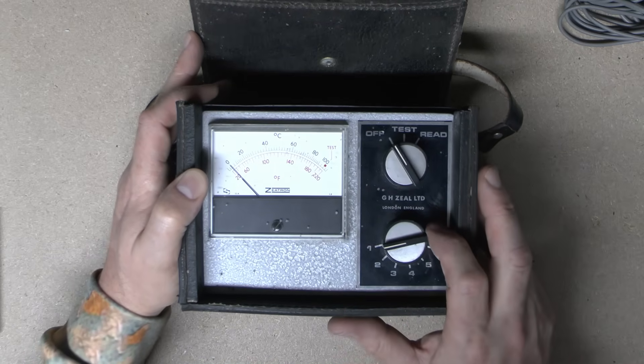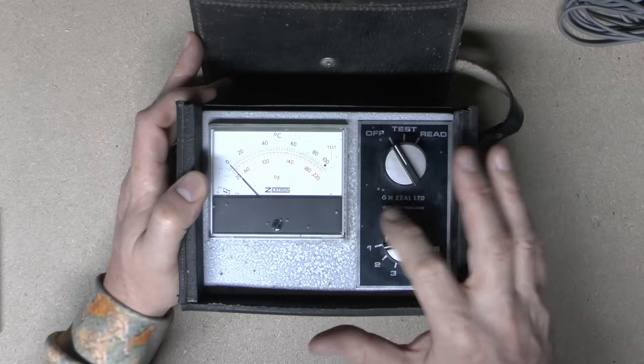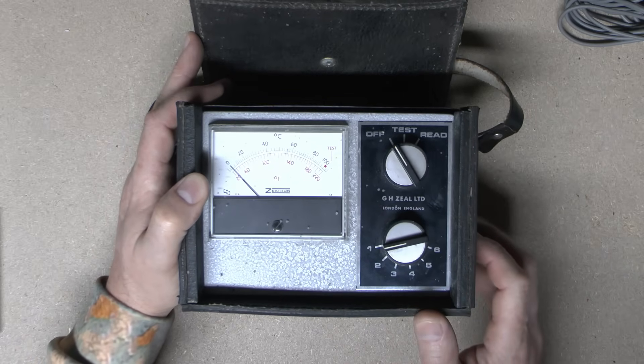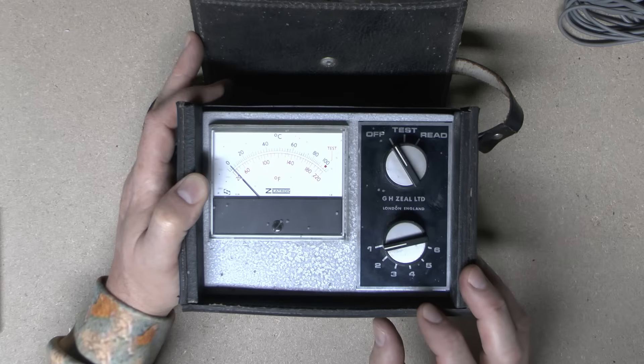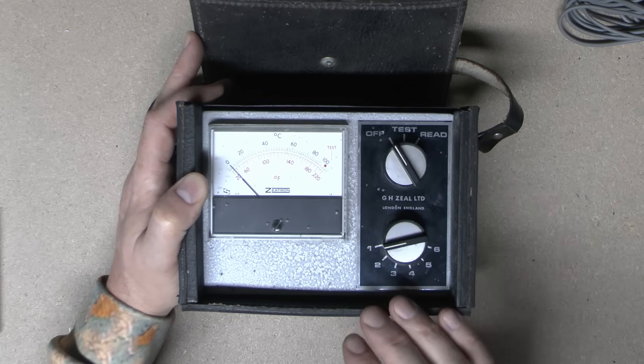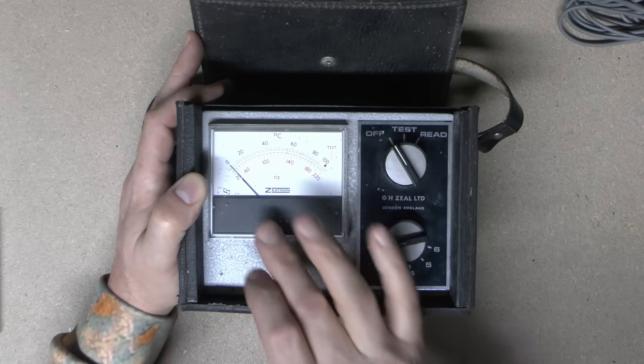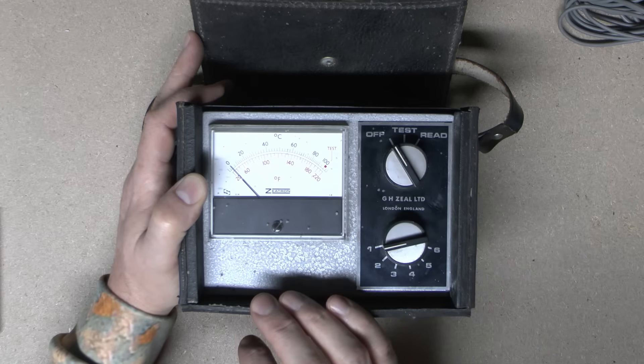This is made by GH Zeal Limited, London, England. Now GH Zeal does still exist, at least partially. It's apparently part of some bigger company now. And they make thermometers. And that's basically what this is. The scale here goes in degrees centigrade, zero to 100. And then you've got the Fahrenheit equivalent underneath.